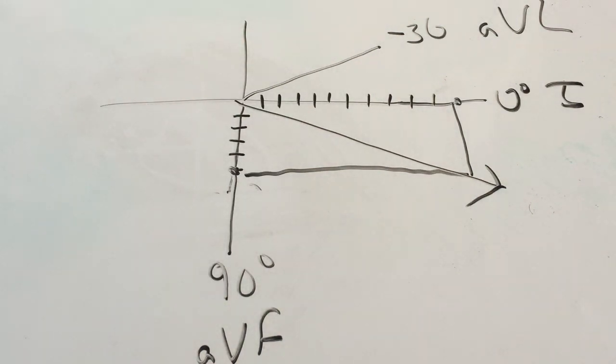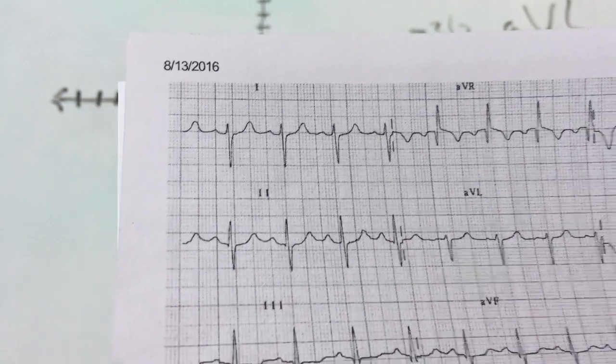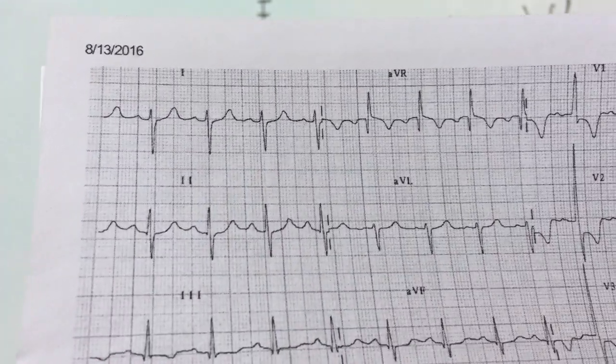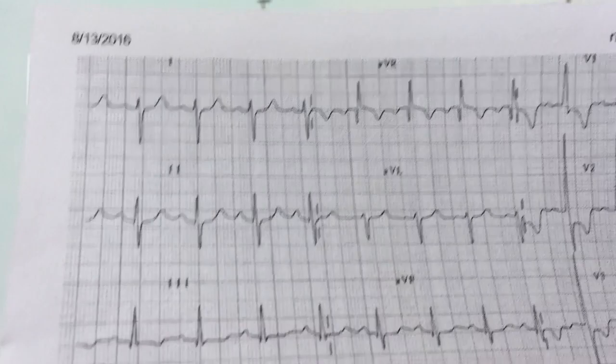As you can see, it falls between 90 degrees and negative 30 degrees. So this is normal axis deviation from a normal EKG, which is what we expected. Okay, so we tried this on a normal EKG, so let's try it on some abnormal EKGs.